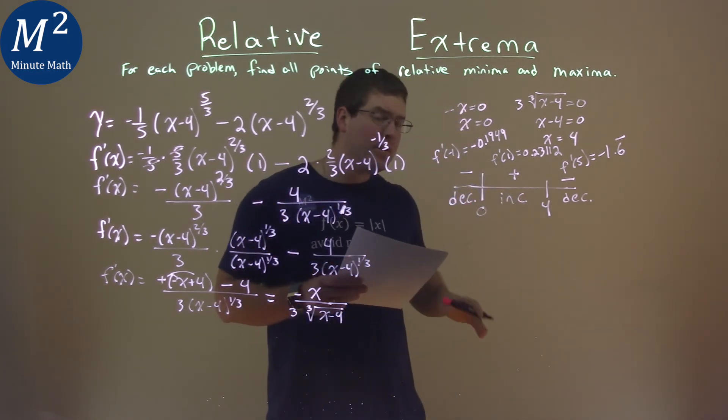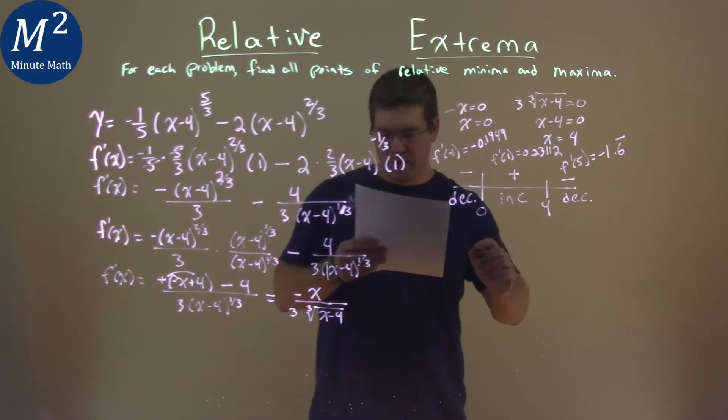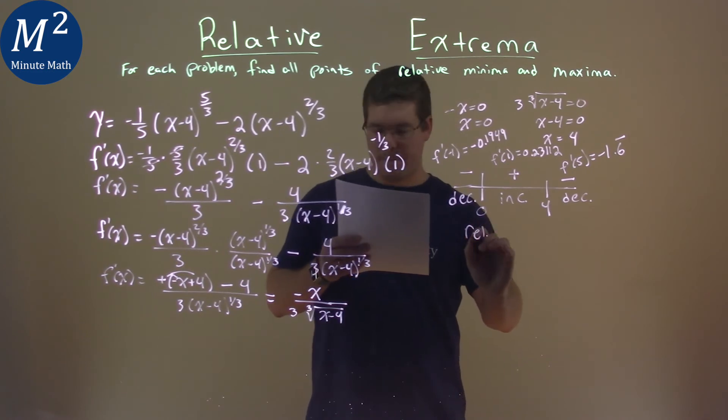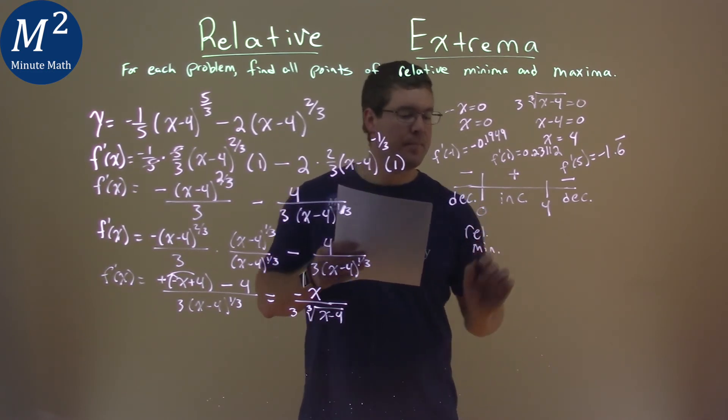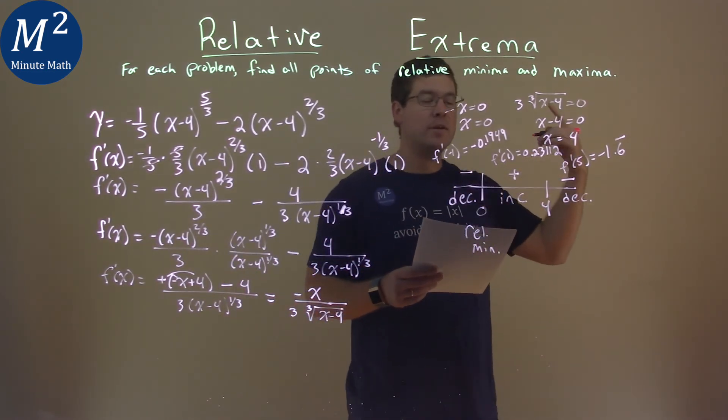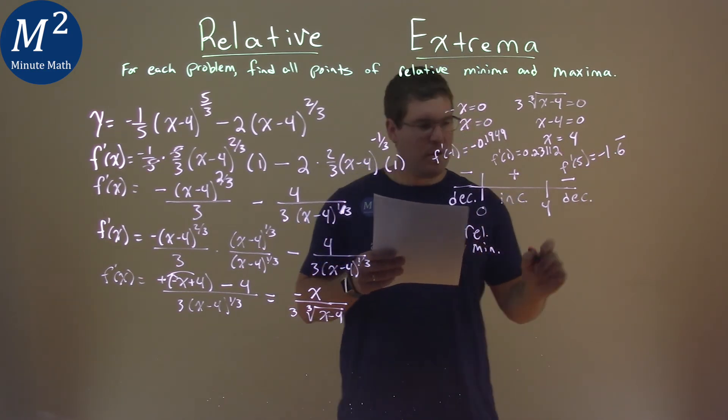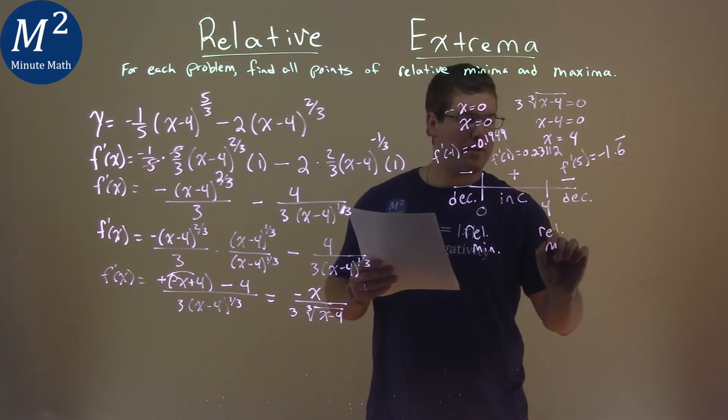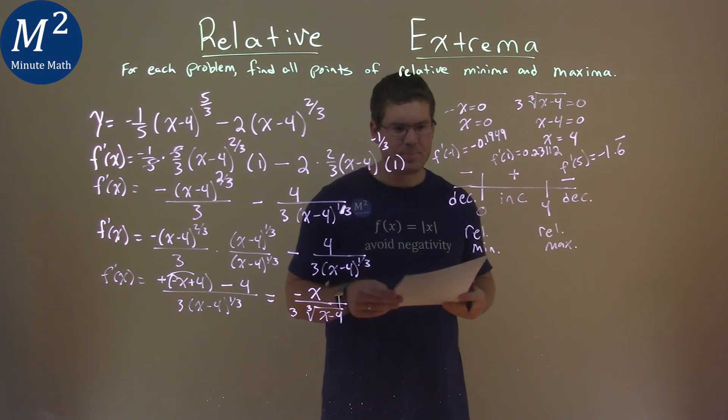So, our function is decreasing, then increasing. We have a relative minimum going on there. If the function is increasing to then decreasing, we have a relative max going on right there.